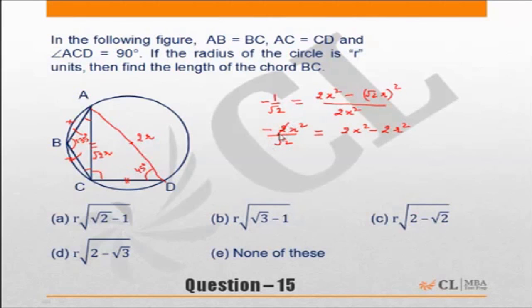Cancelling out terms, we get x squared plus (1 by root 2) x squared equals r squared.